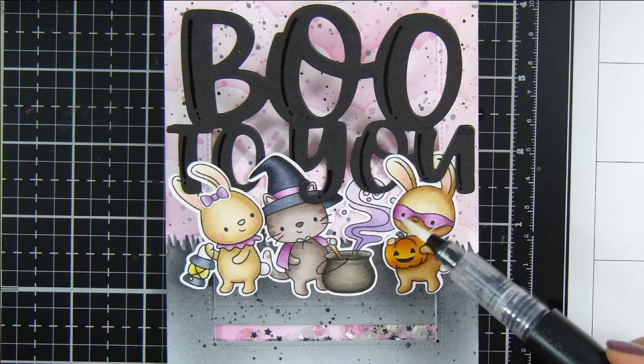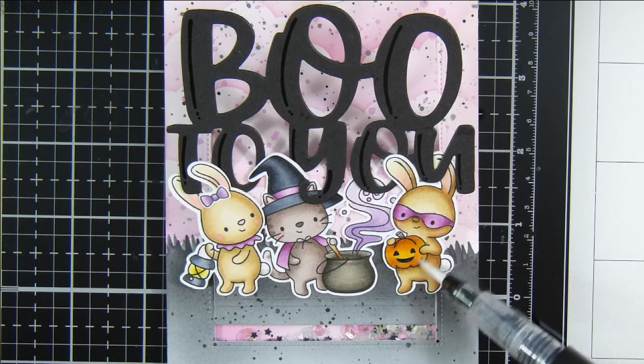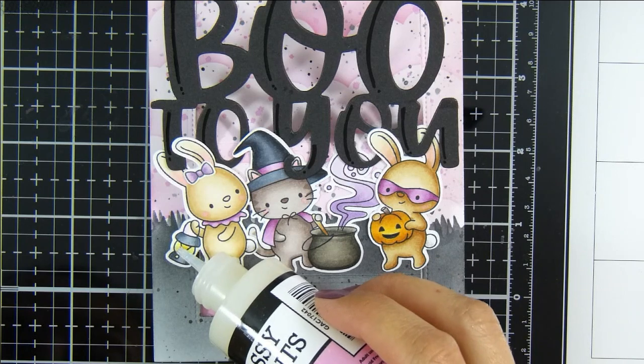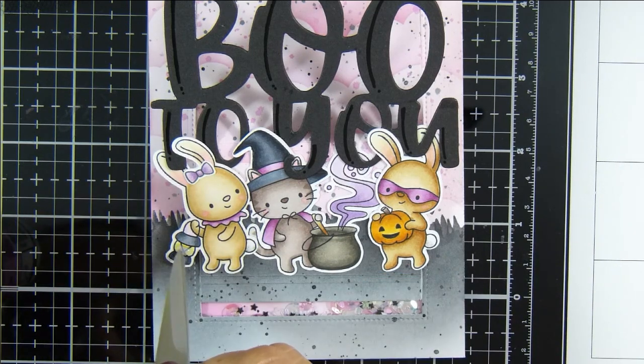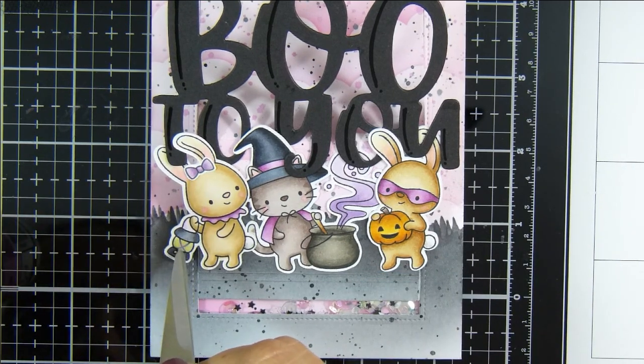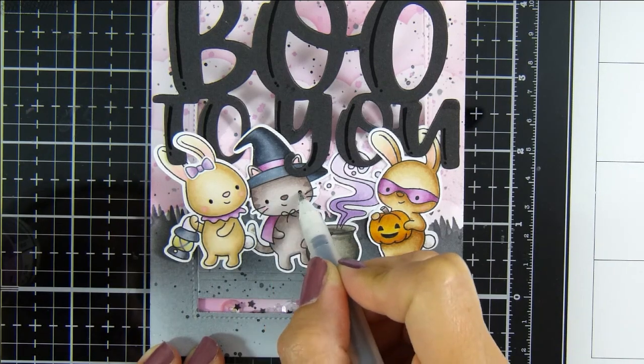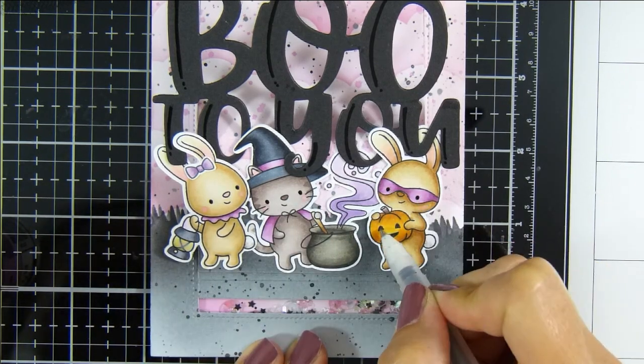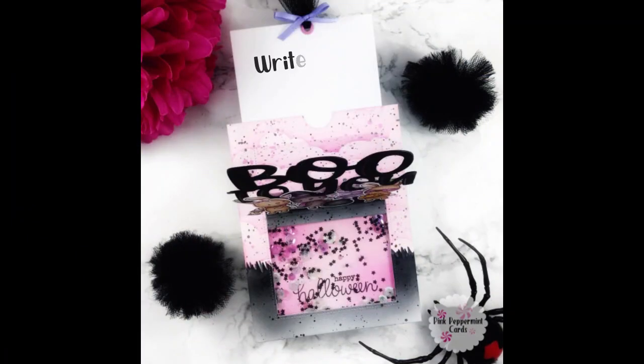So definitely check that out in the description box below. I'm adding some Spectrum Noir sparkle pen to some of the elements of the critters and some glossy accents on the lantern, and finally, some black glaze gel roll pen to the eyes.